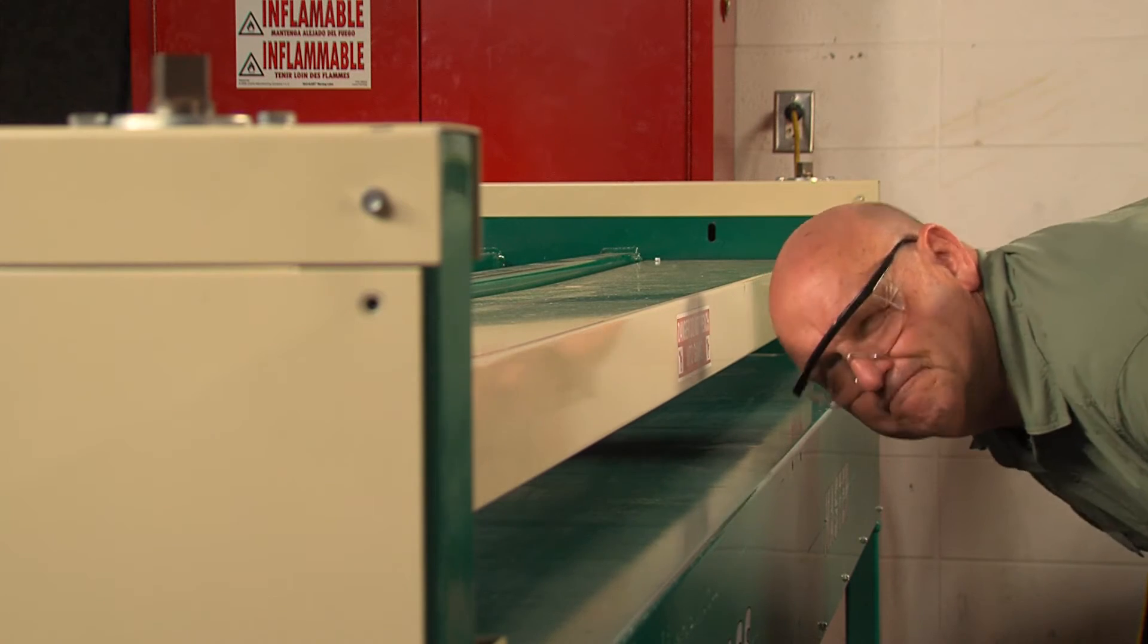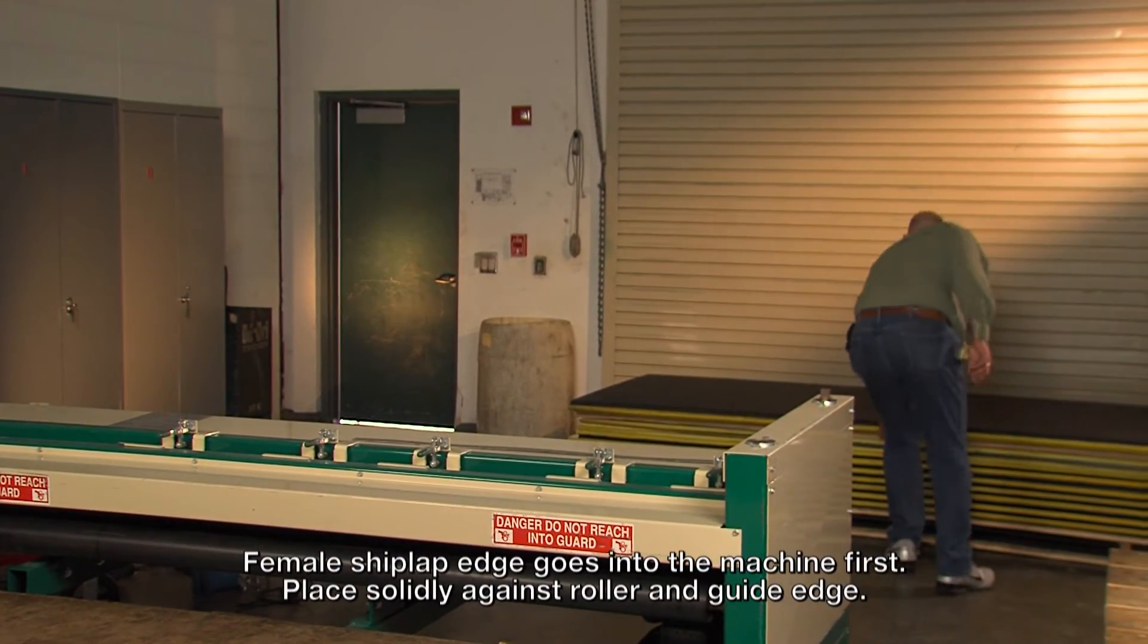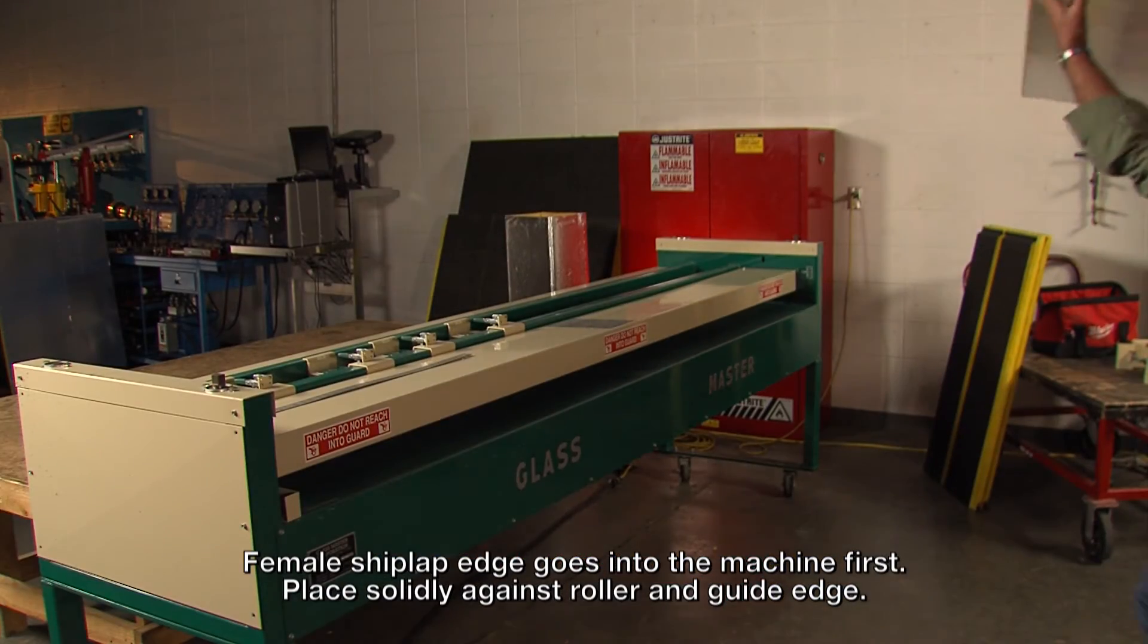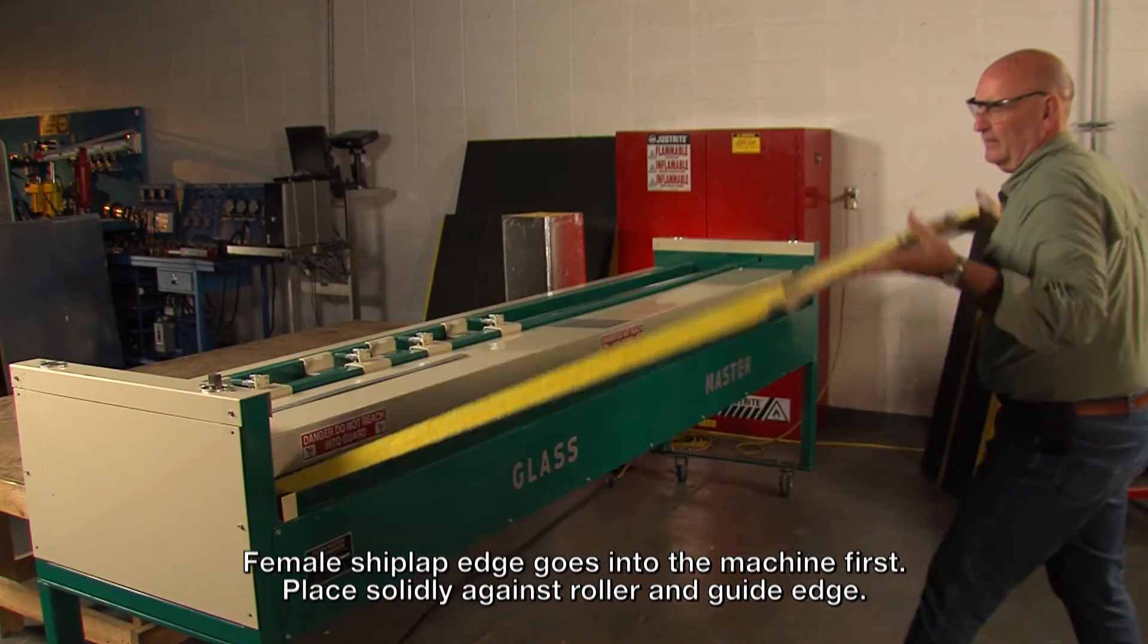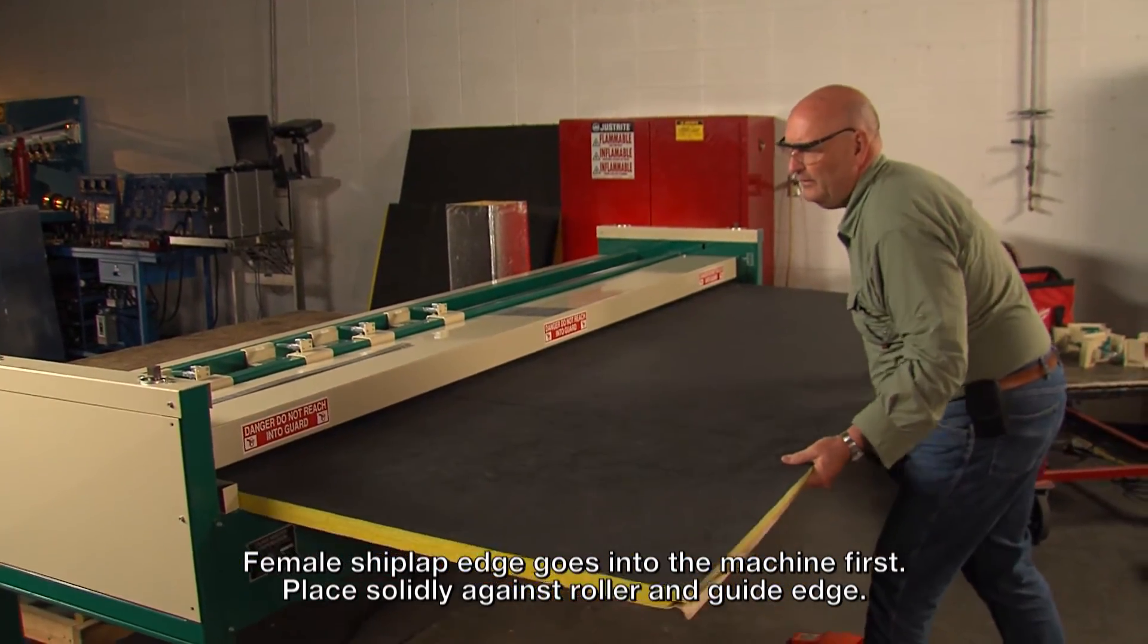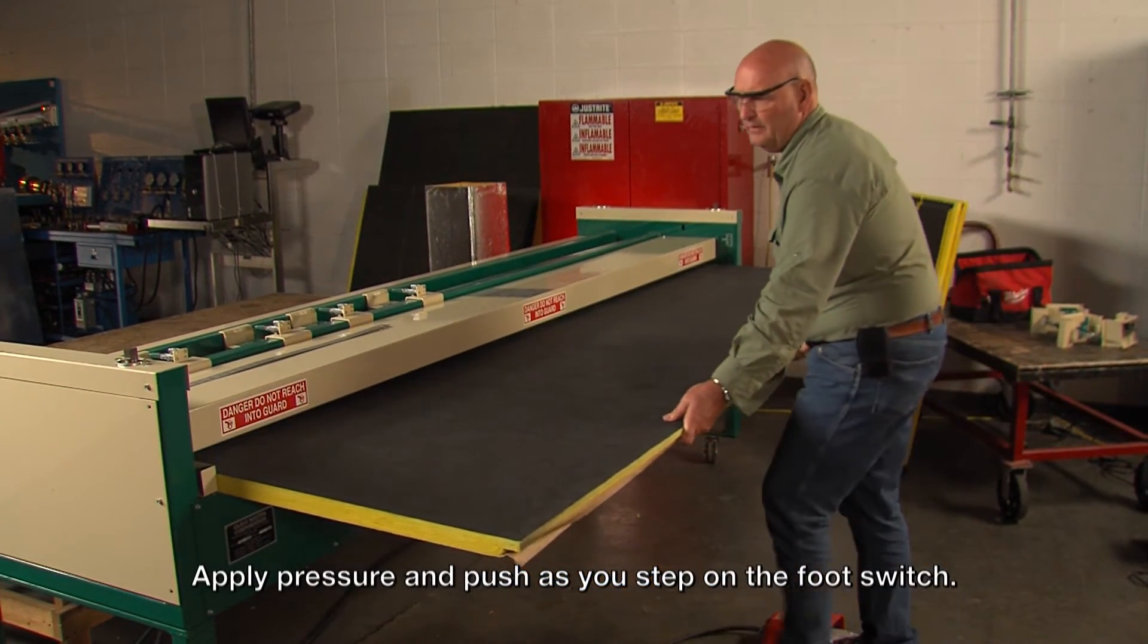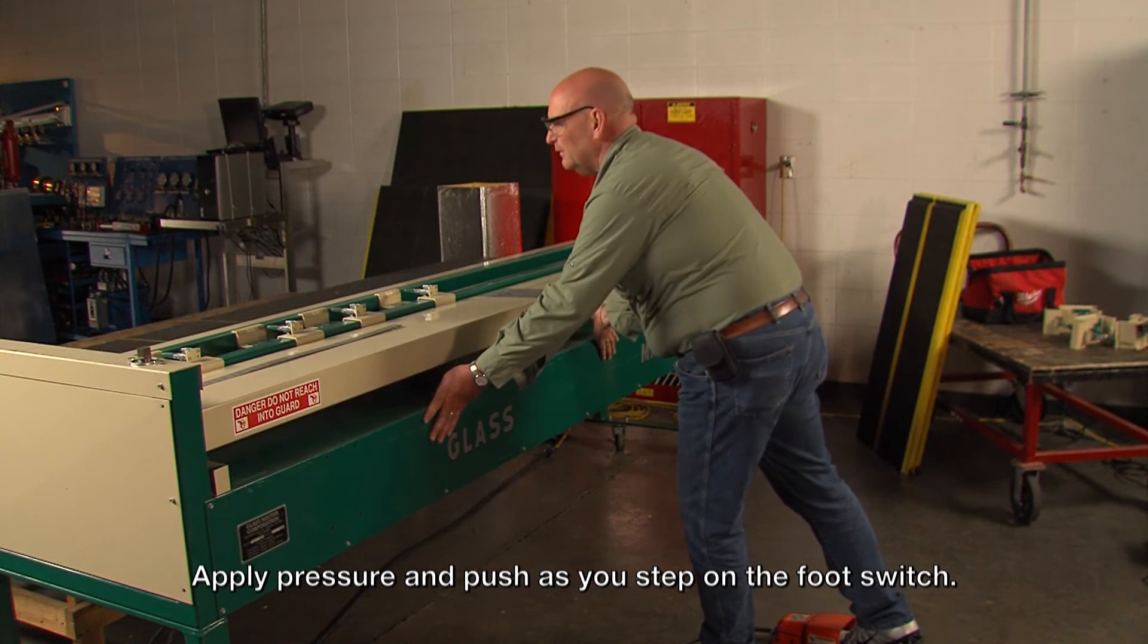Now we are ready to groove the duct board. Note that the female shiplap edge goes into the machine first. The female shiplap edge is pushed in solidly against the roller while the left edge is up against the left side guide. Turn the machine on forward, apply pressure or push the board with both hands in the direction of the machine, and step on the foot switch.